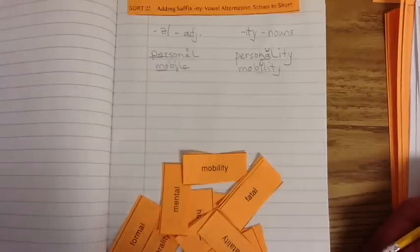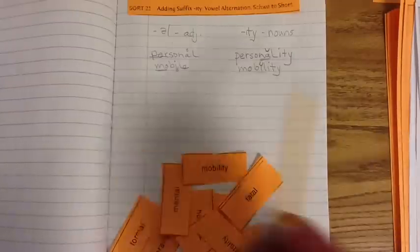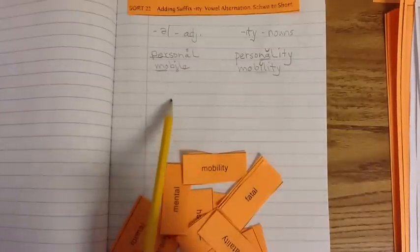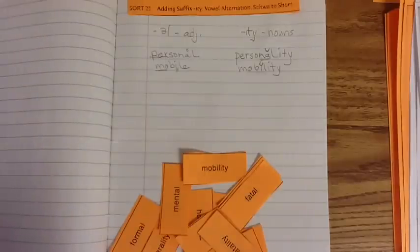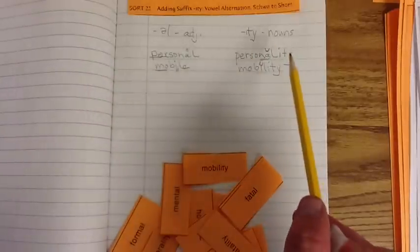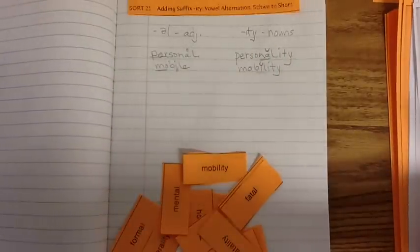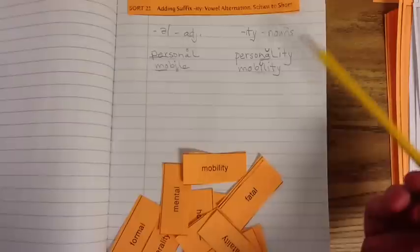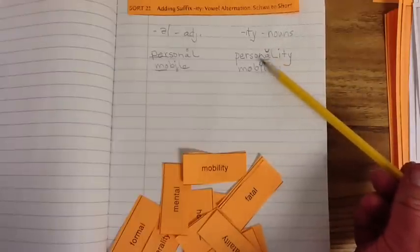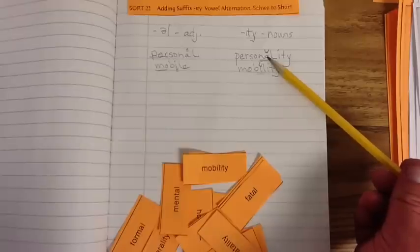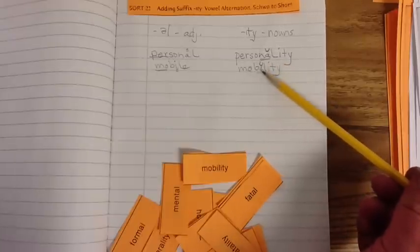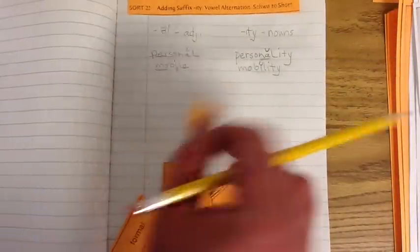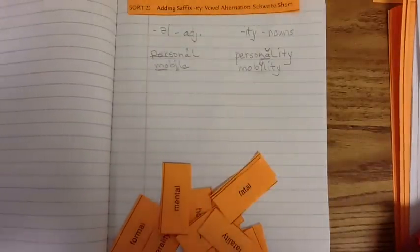All right guys, it is time for you to get to work. Again, this column, we're dealing with the base word, the main word. And again, it has the schwa sound to it. And then when you add I-T-Y, it becomes a noun. And the vowel sound changes to short vowel sound, as in personality and mobility. Kind of cool. We've done this one so we can get it out of the way. All right guys, continue. Good luck. Be prepared.